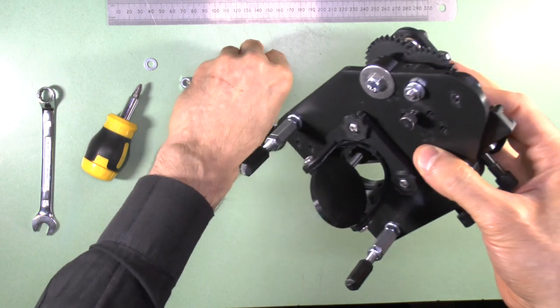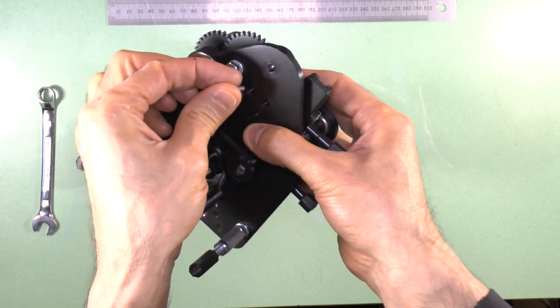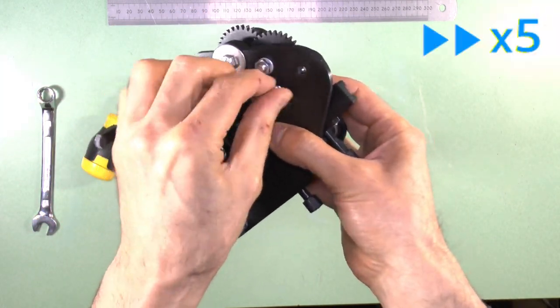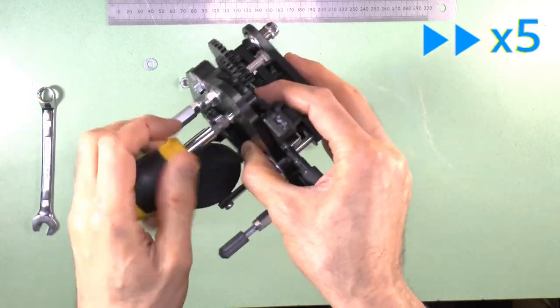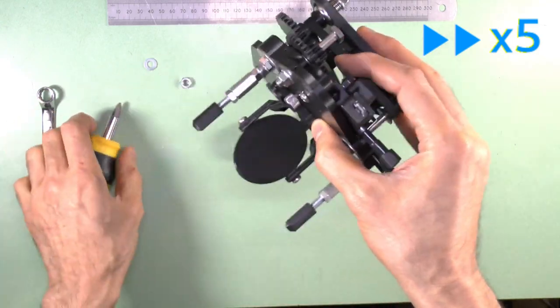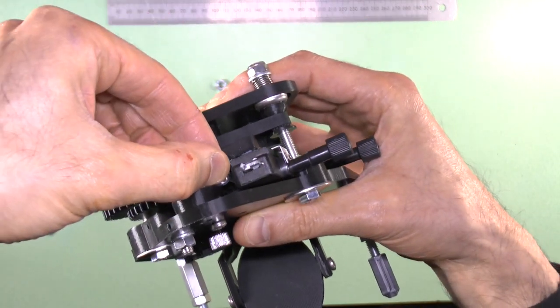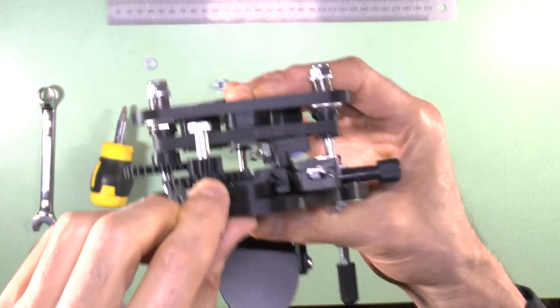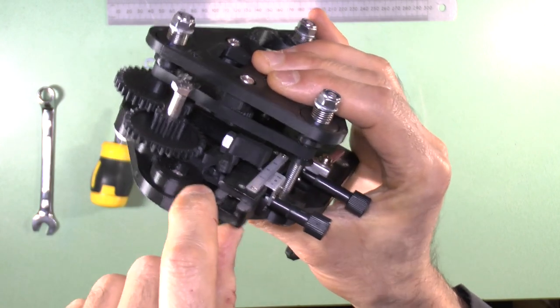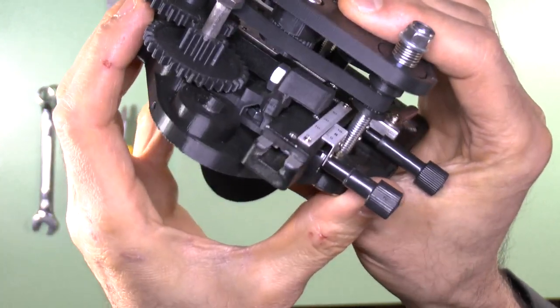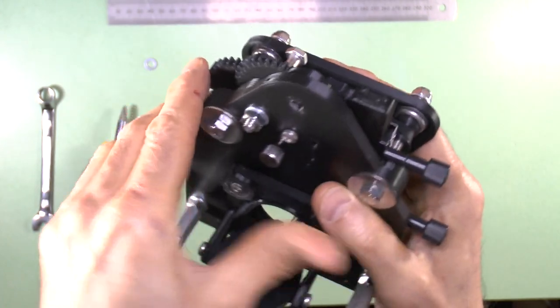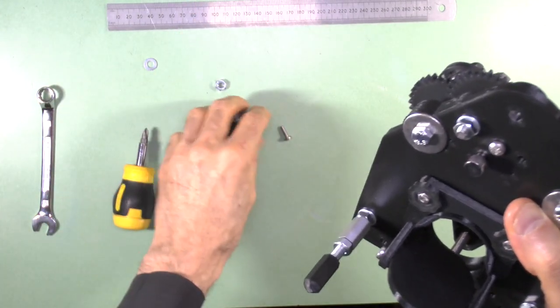Insert a 12mm long M4 screw from the underside of the base plate into the M4 nut that is in the stabilizer, but do not tighten it fully. Now, drop another 3mm thick M4 nut into the housing for it in the stabilizer as shown. And insert another M4 screw from the underside of the base plate into that nut, but do not tighten it fully.